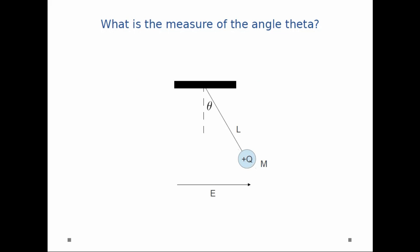It's connected to a string with length L, and as you can see, it's tied to the ceiling somewhere. And this entire system is immersed in some electric field E. You can see E is pointing to the right, and that causes some force on the pendulum bob, which in turn causes the angle theta.